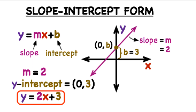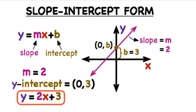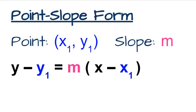In Algebra 1, you most frequently used the slope-intercept form of a line, which is y equals mx plus b. We love slope-intercept form because it is the easiest to graph. But when it comes to creating an equation of a line, point-slope form tends to be the simplest.